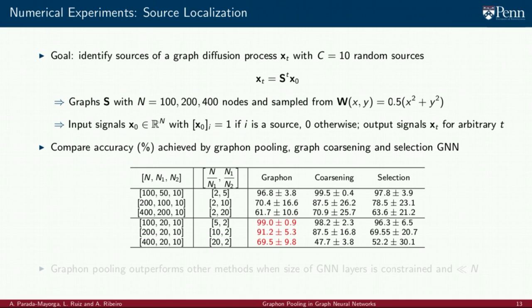In this experiment, our objective is to compare the ability of two-layer GNNs with three different pooling strategies: graphon pooling, graph coarsening, and selection pooling, to solve the source localization problem. We do this by comparing the classification accuracies achieved by each of these architectures on the test set.